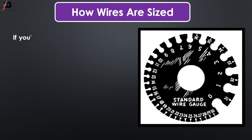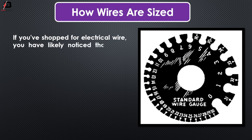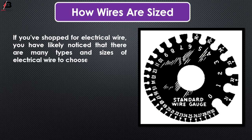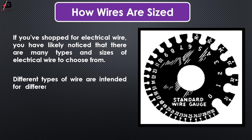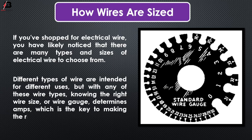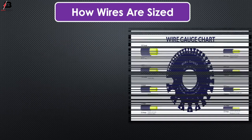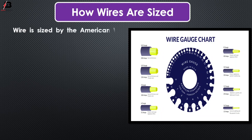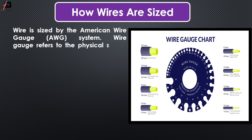How are oils sized? If you have shopped for electrical oil, you have likely noticed that there are many types and sizes of electrical oil to choose from. Different types of oil are intended for different uses, but with any of these oil types, knowing the right oil size or oil gauge determines amperes, which is the key to making the right choice. Oil is sized by the American Oil Gauge, AWG, system.